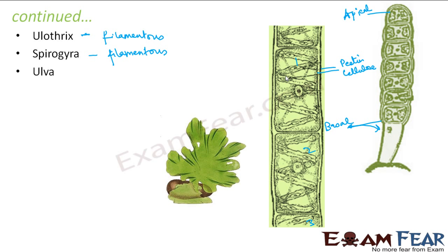The next example is Ulva, also known as sea lettuce. It is often edible in salads in some places. It gives a leaf-like appearance and generally grows attached to rocks. Two layers of irregularly arranged cells are formed in case of Ulva. Chloroplasts are present and are generally cup-shaped. These are also known as salad leaves, as people eat them as part of salad.